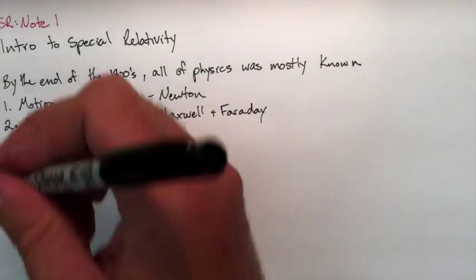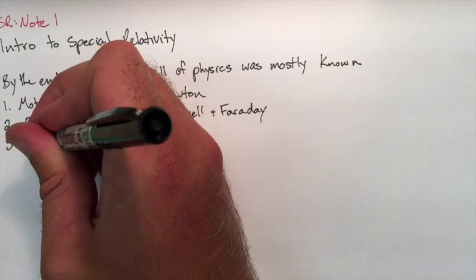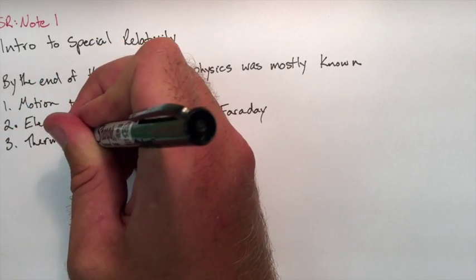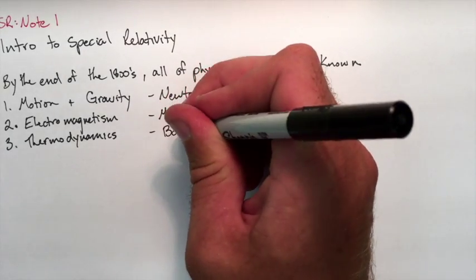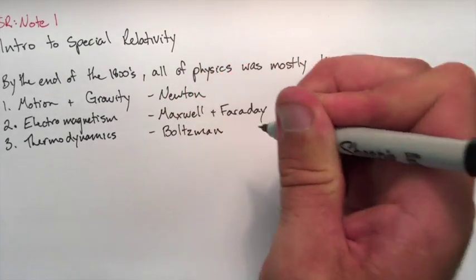Even though we knew all that stuff, there were still a few remaining questions. Number one, what's inside of an atom? There was the billiard ball model and the raisin bun model, but other than that, we really didn't know what was going on.